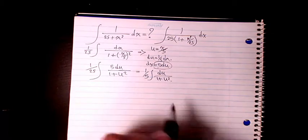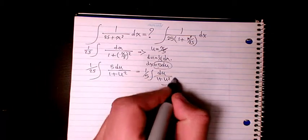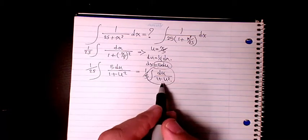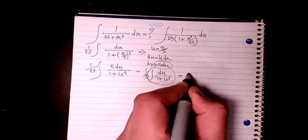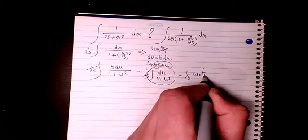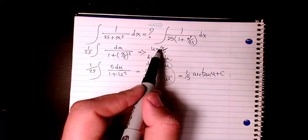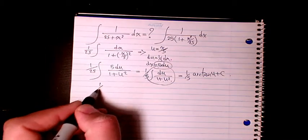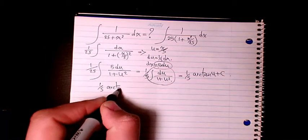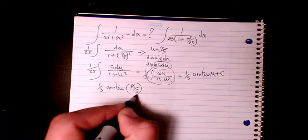And you know the integration of du over 1 plus u squared is arctangent, so it will be 1 over 5 arctan u plus c. And what is u? It's x over 5. So it's going to be 1 over 5 arctan x over 5 plus c.